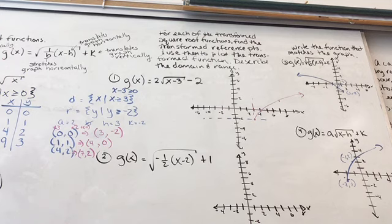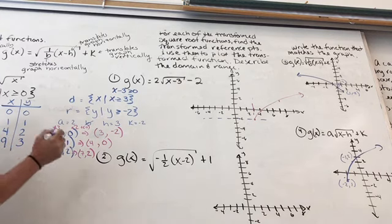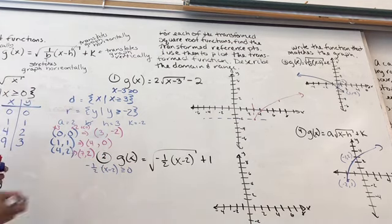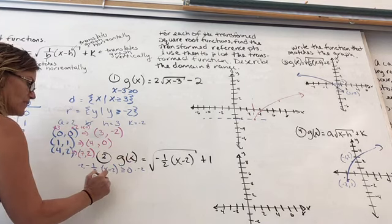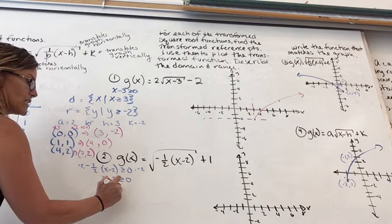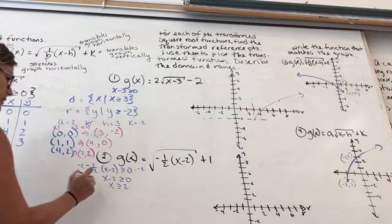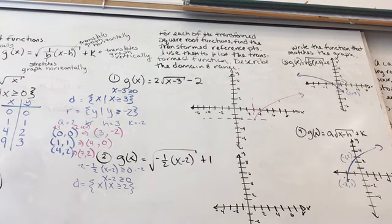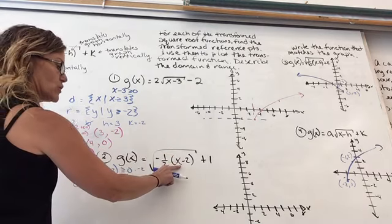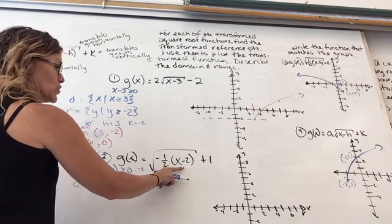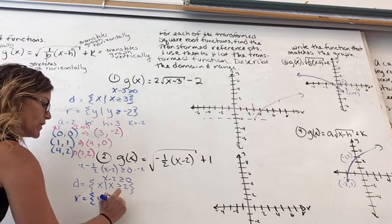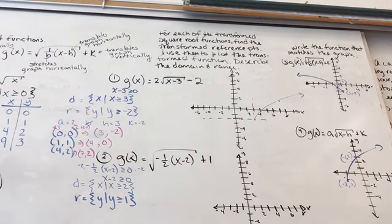For example 2, we find the domain by setting what's inside the radical greater than or equal to 0. Multiplying both sides by negative 2 gives X minus 2 greater than or equal to 0, so X is greater than or equal to 2 — that's our domain. To find the range, plug in 2: 2 minus 2 is 0, half of 0 is 0, square root of 0 is 0, plus 1 is 1. So the range is Y greater than or equal to 1.